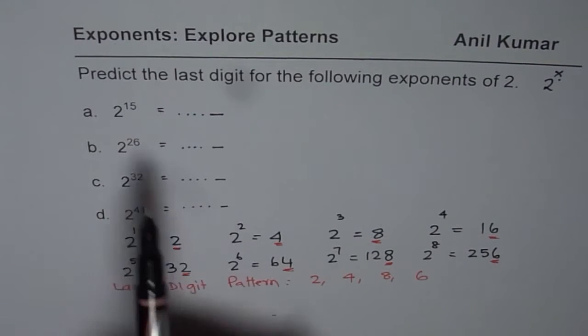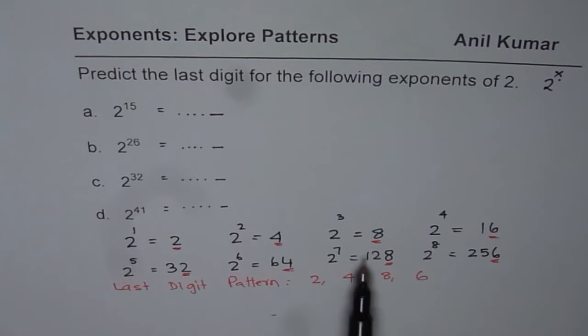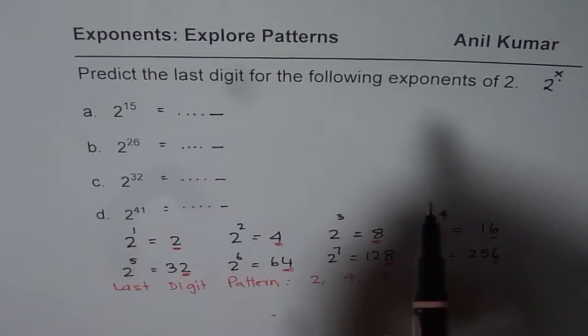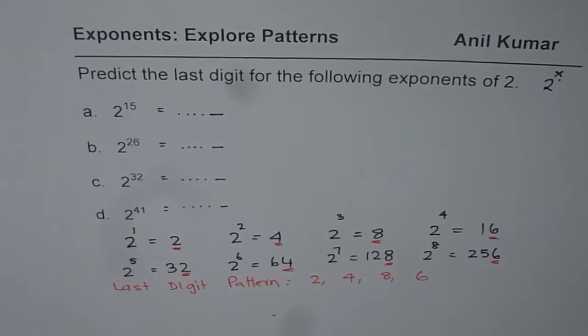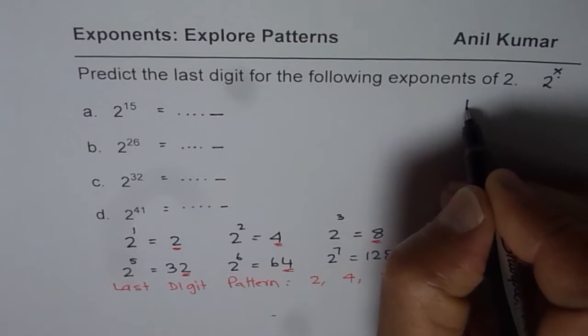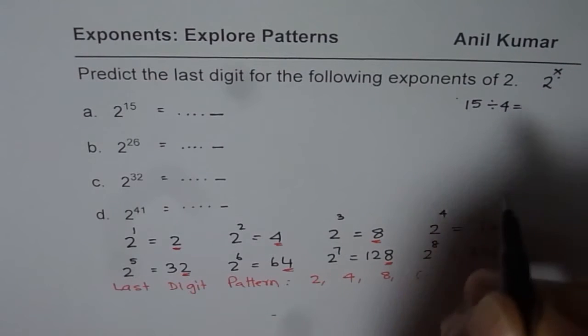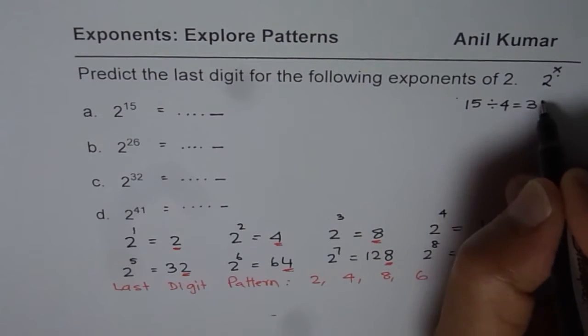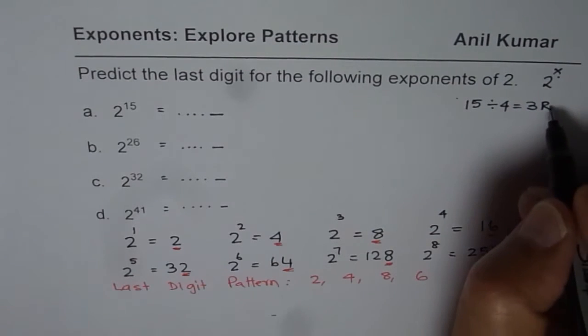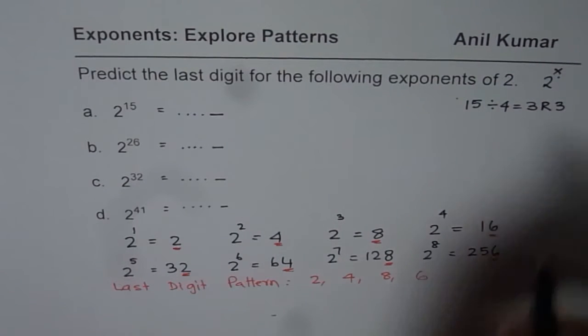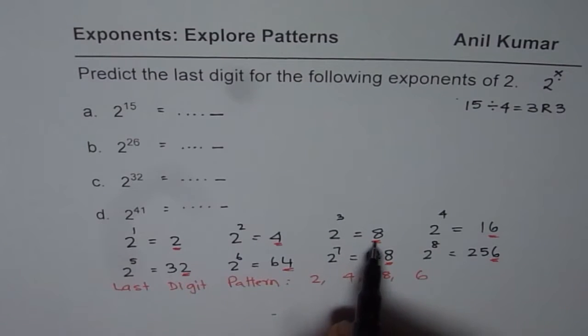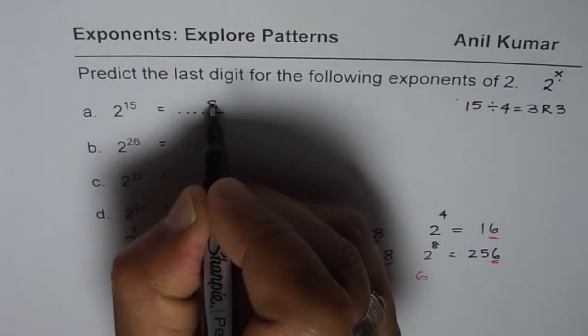So now let's find out where will 15 come. You could count also 8, 9, 10, 11, 12, 13, 14, 15. I mean you can count and then figure it out. But it is better to use division. So let's divide 15 by 4. If I divide 15 by 4, 4 times 3 is 12 and the remainder is 3. When you take away 12, you get 3 as the remainder. So since 3 is the remainder, the last digit should be 8.